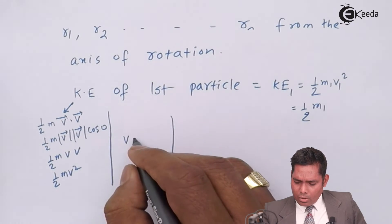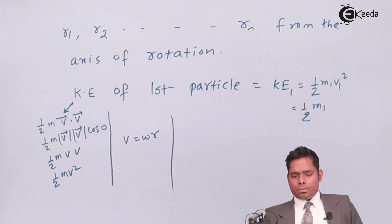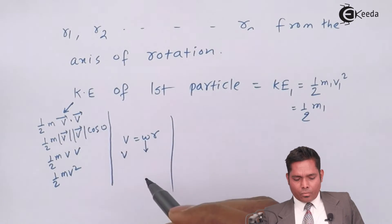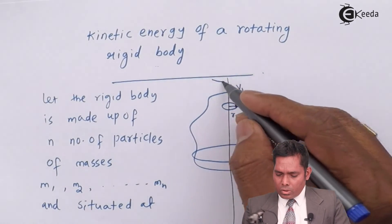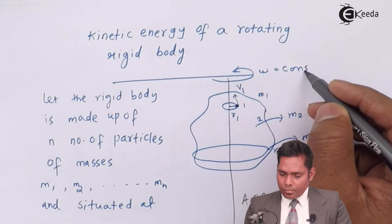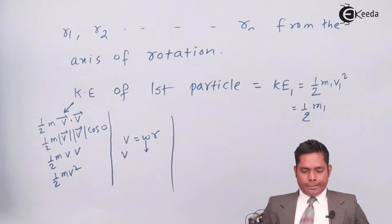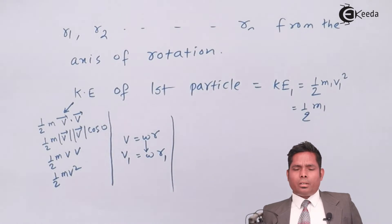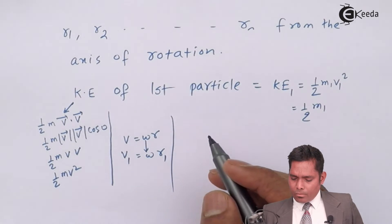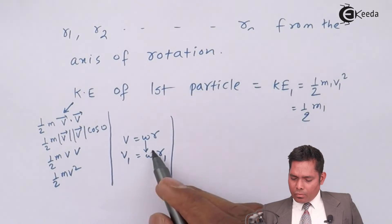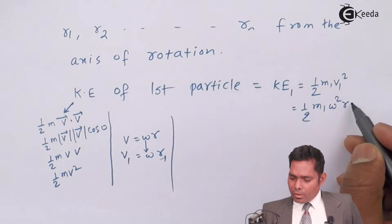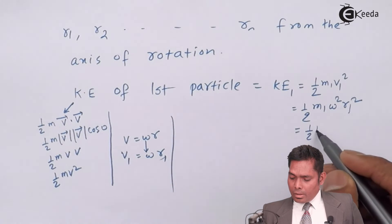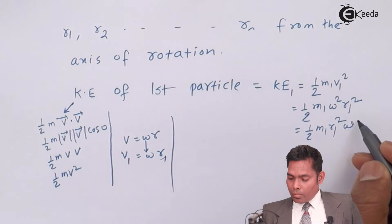What is v1? We know that for a rotating rigid body, v = ωr. Since omega remains constant for the body rotating with constant angular velocity, v1 = ω·r1. Squaring this gives v1² = ω²r1². Therefore, the kinetic energy of the first particle becomes ½m₁r₁²ω².